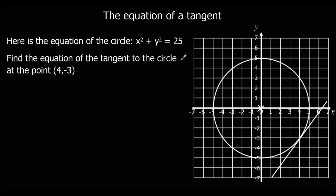We're being asked to find the equation of a tangent to the circle at the point (4, -3). How do we work it out? Well, we need to know that the radius — from the center to our point — meets the tangent at 90 degrees. That's one of the circle theorems. So the tangent meets the radius at a 90 degree angle.